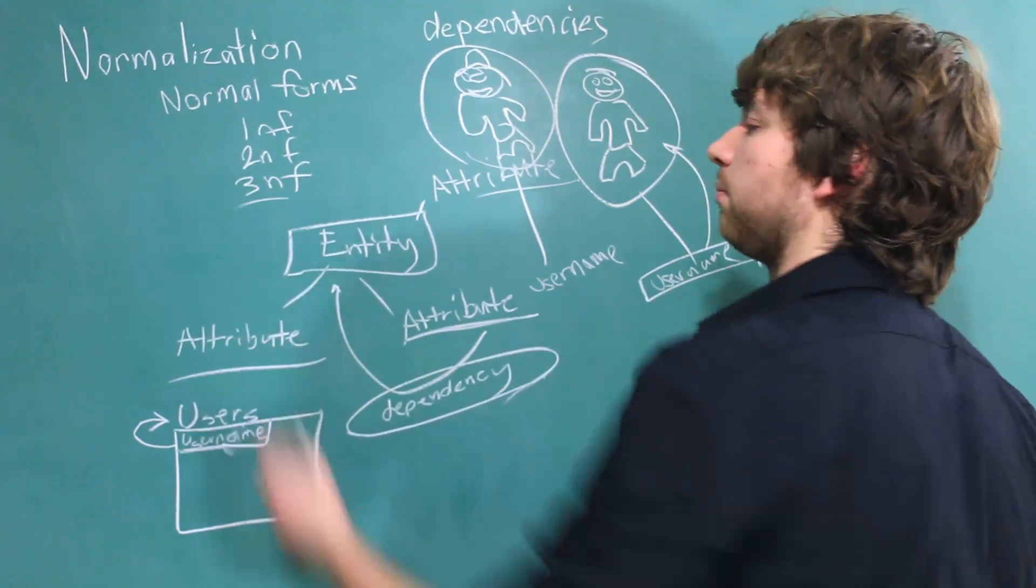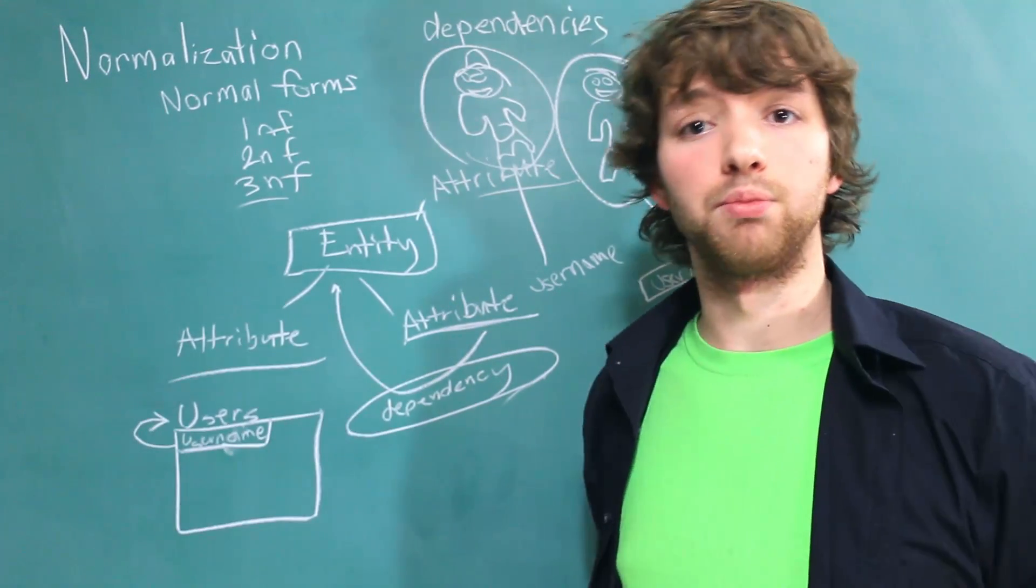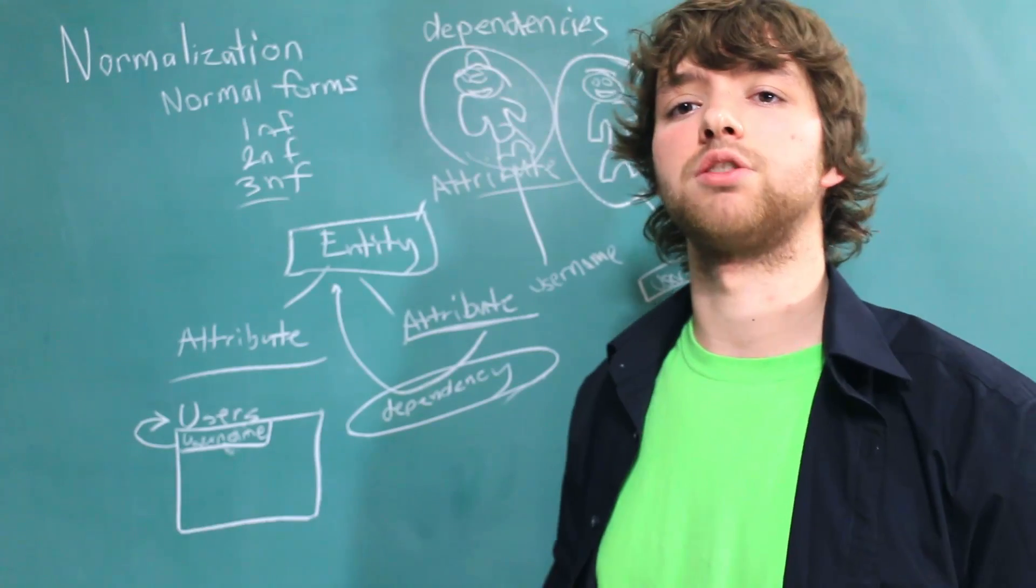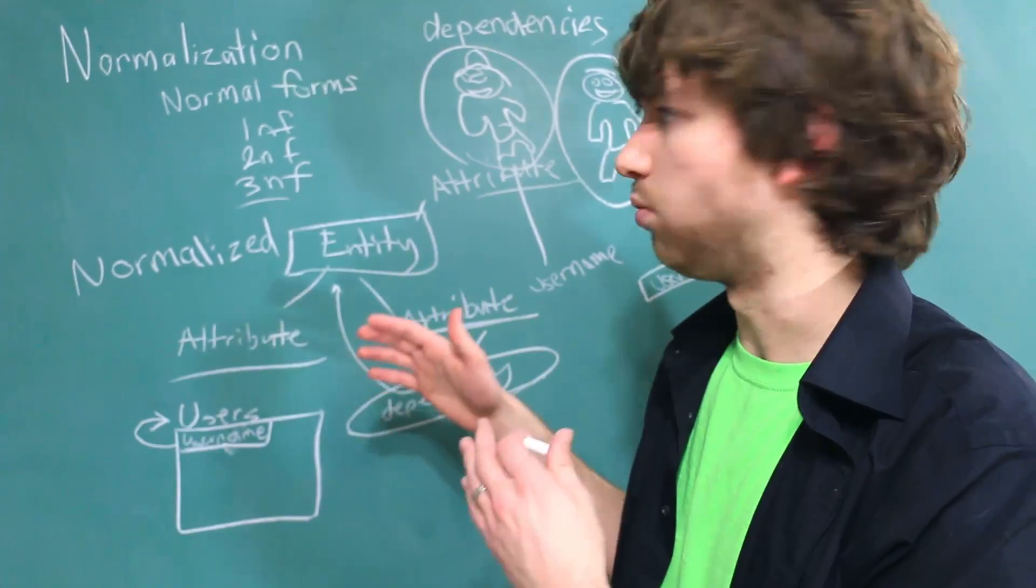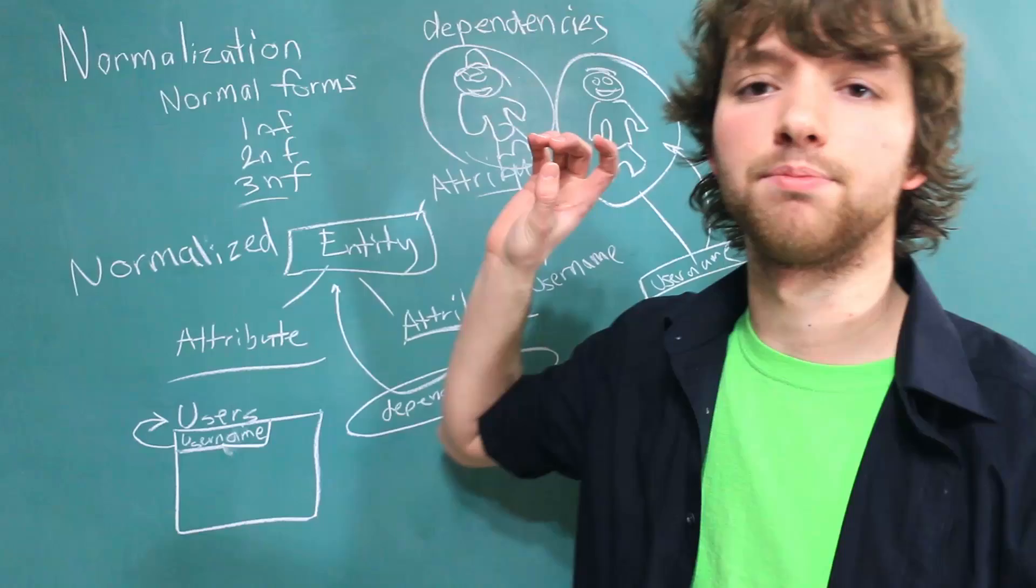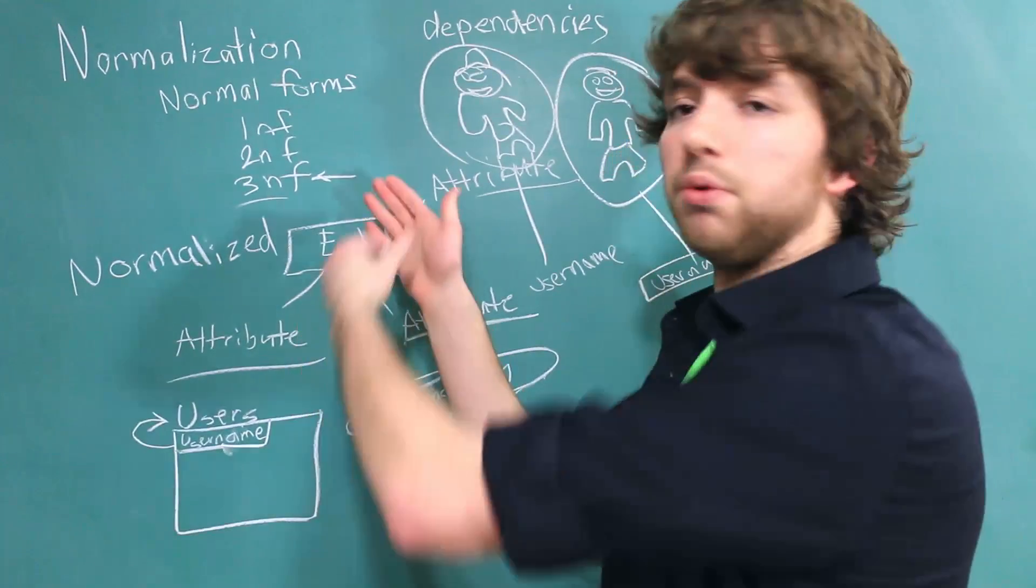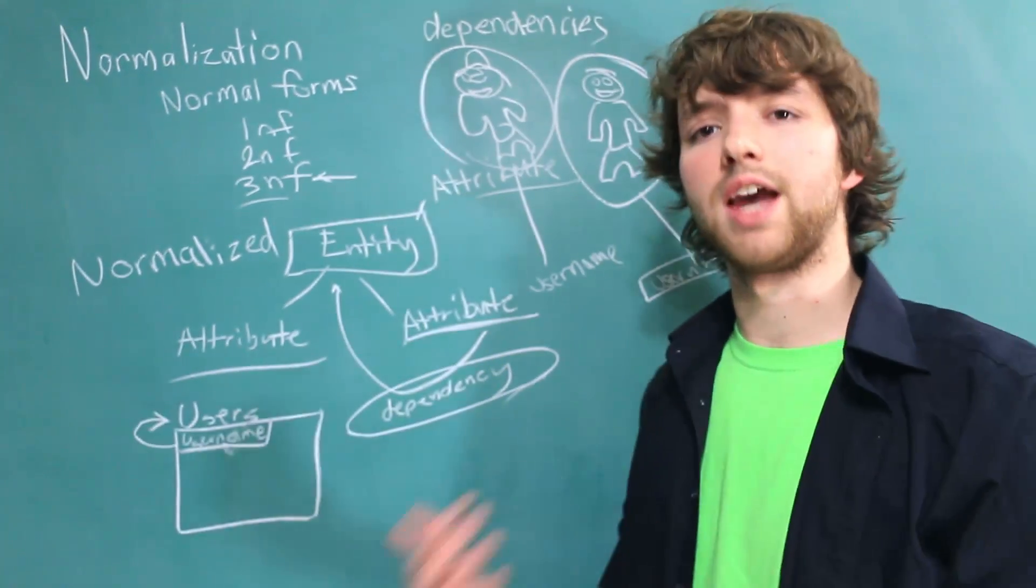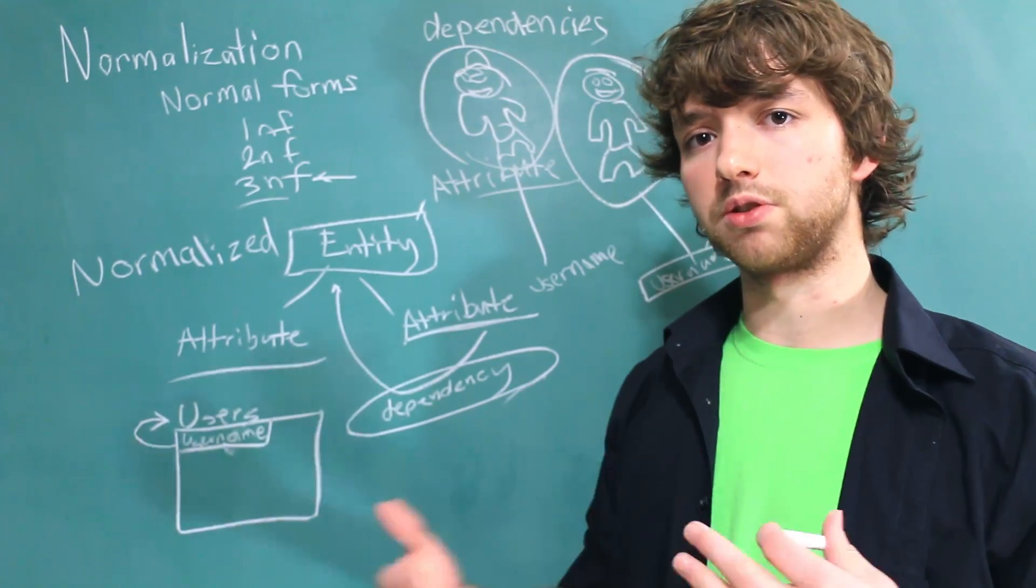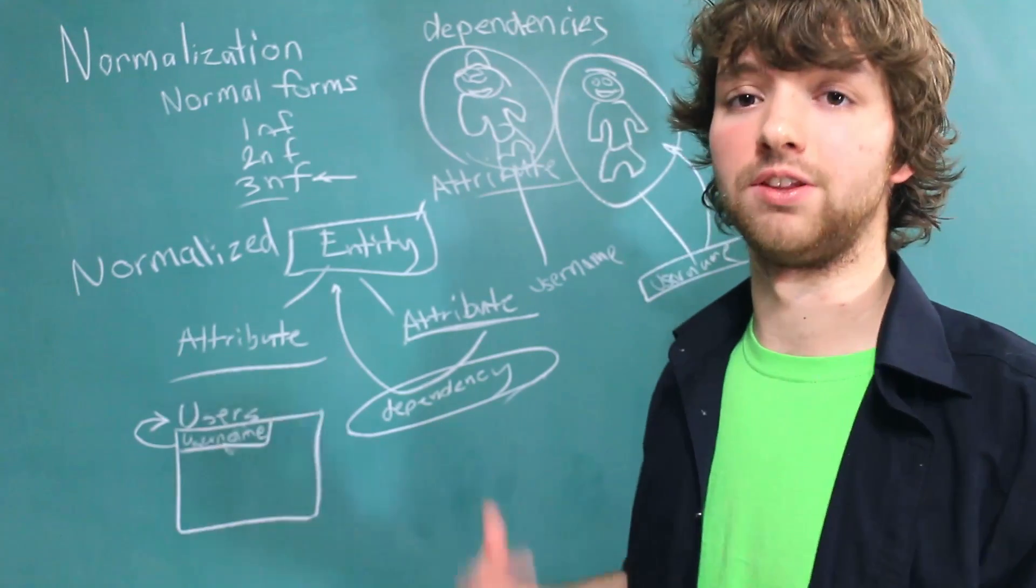Now going beyond third normal form, there's Boyce Codd normal form, fourth normal form, fifth normal form, blah blah blah normal form, and yada yada normal form, and just a bunch of other things. But once you get to third normal form, you can basically consider your database to be normalized. Normalized is a state where all of the normal forms have been done on our database and we fix all of the problems. I personally think third normal form is suitable for 99% of applications, so there's really not a huge reason to go past that. But occasionally there is, so it still might benefit you learning the other normal forms.